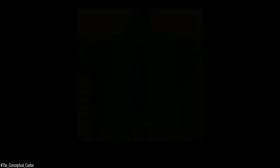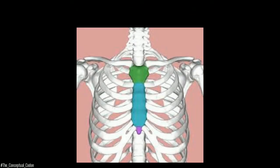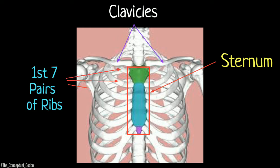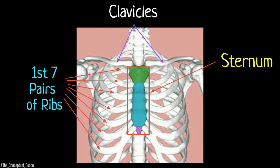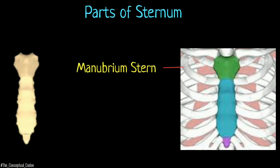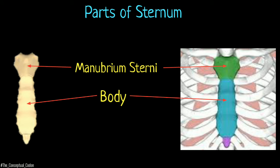Now let's look at the sternum closely. The sternum, also known as the breast bone, lies anteriorly in the midline and articulates with the clavicles and the first seven pairs of ribs. The three parts of the sternum include the manubrium sterni, body of the sternum, and the xiphoid process.